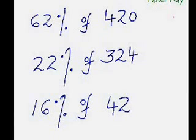So 62% is nothing but 50% plus 10% plus 2%. 50% would be half of this, that is 210, isn't it? And 10% would be 42, so 210 plus 42 would be 252.